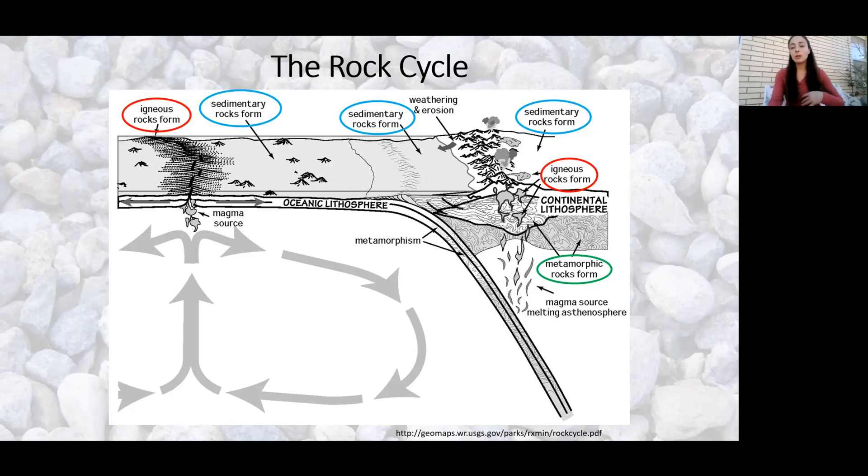So metamorphic rocks can be re-metamorphosed. They can even be re-melted and recooled into igneous rocks. Sedimentary rocks can become igneous again if they melt completely, or metamorphic if they're just subjected to high pressure and heat and deform. Or metamorphic and igneous rocks can become sedimentary rocks from erosion and re-lithification. So it can go pretty much any which way that you see.